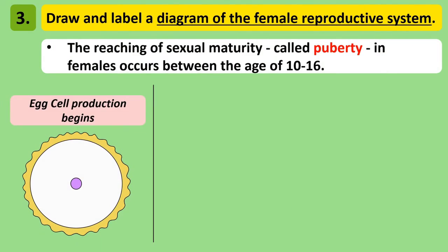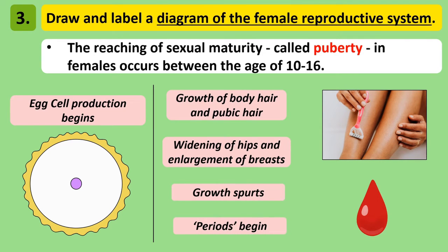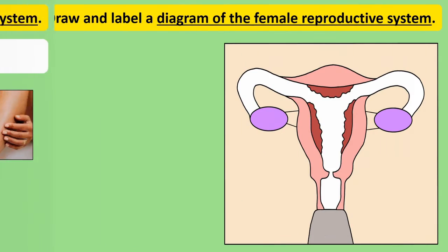Females begin to produce egg cells once they enter puberty, usually between the ages of 10 to 16. Changes that take place in a female during puberty include the growth of body and pubic hair, widening of hips and development of breasts. Females begin to experience periods once they enter puberty.